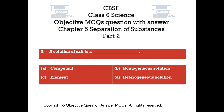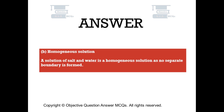Question number 8. A solution of salt is: Option A, Compound. Option B, Homogeneous solution. Option C, Element. Option D, Heterogeneous solution. The right answer is Option B — Homogeneous solution. A solution of salt and water is a homogeneous solution, as no separate boundary is formed.